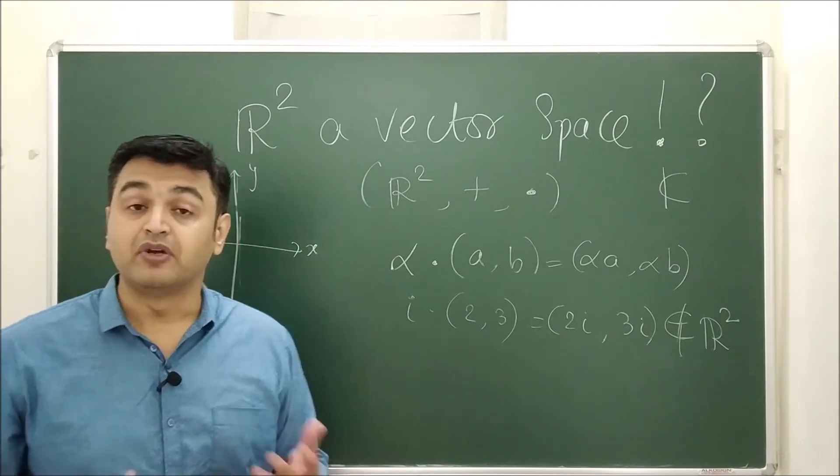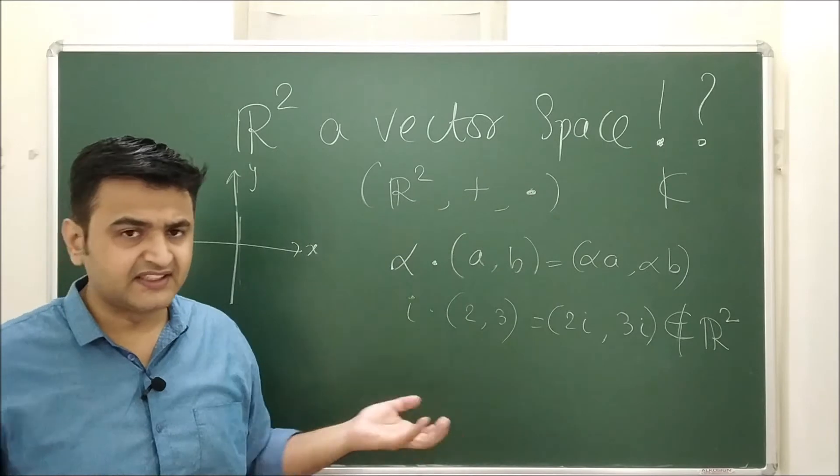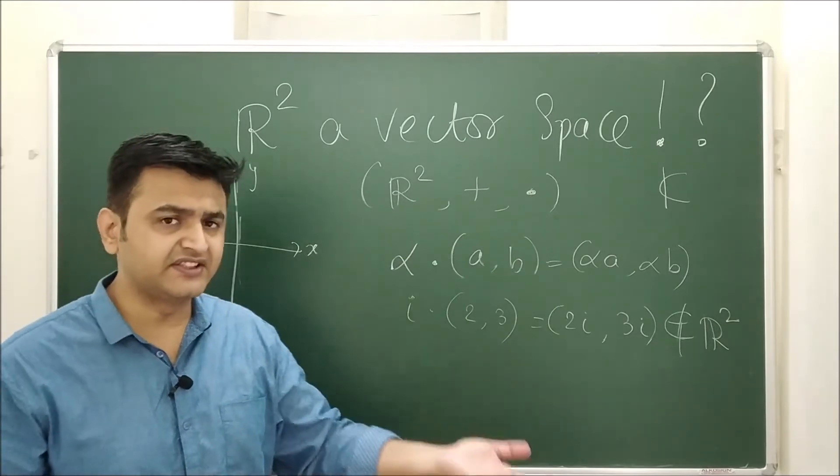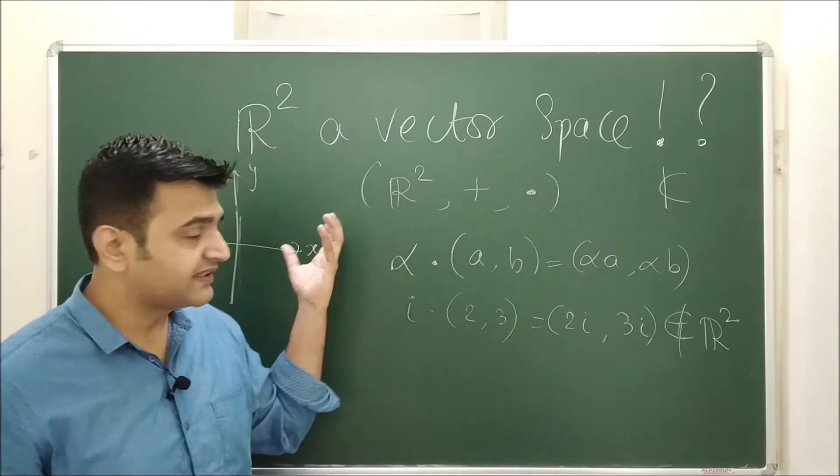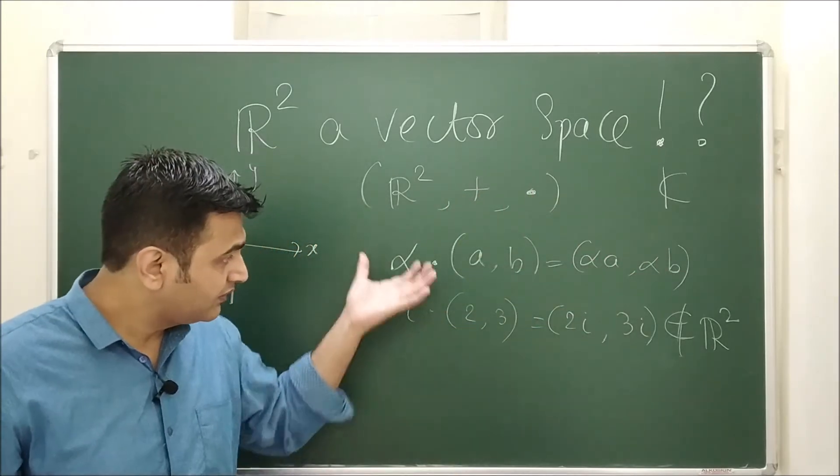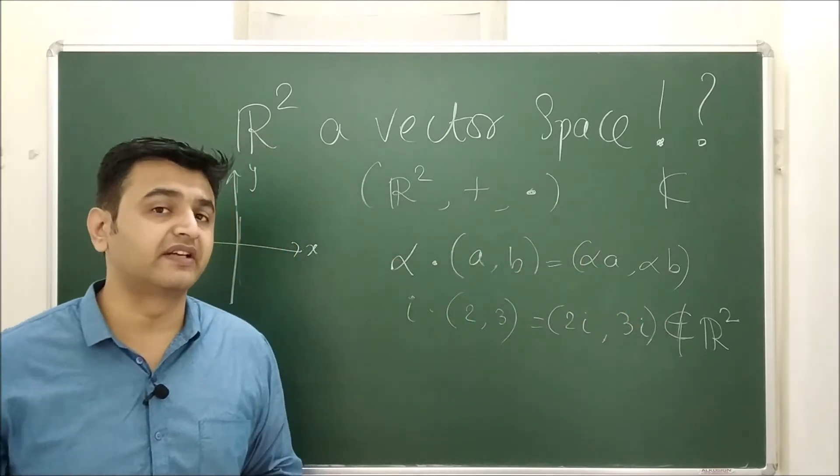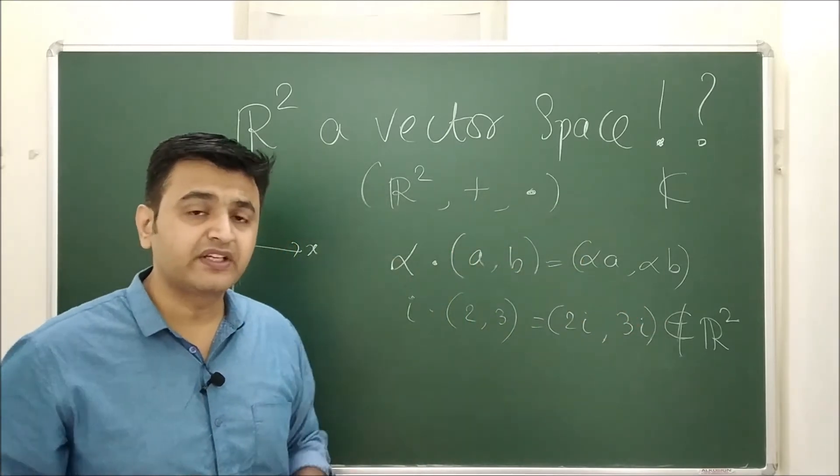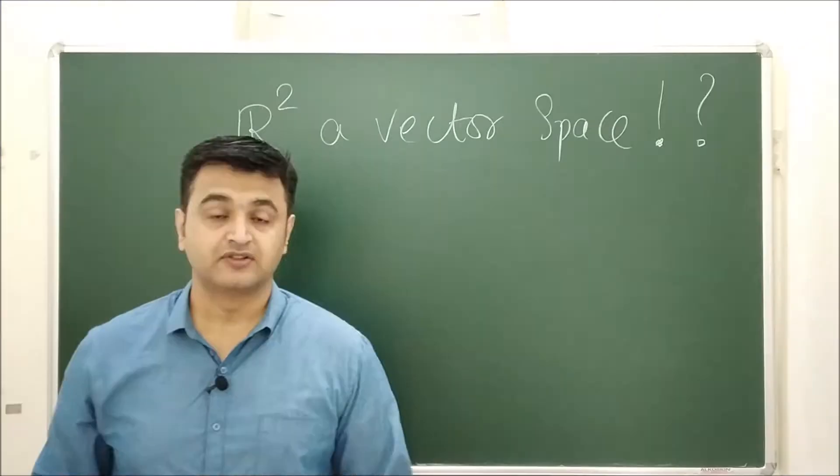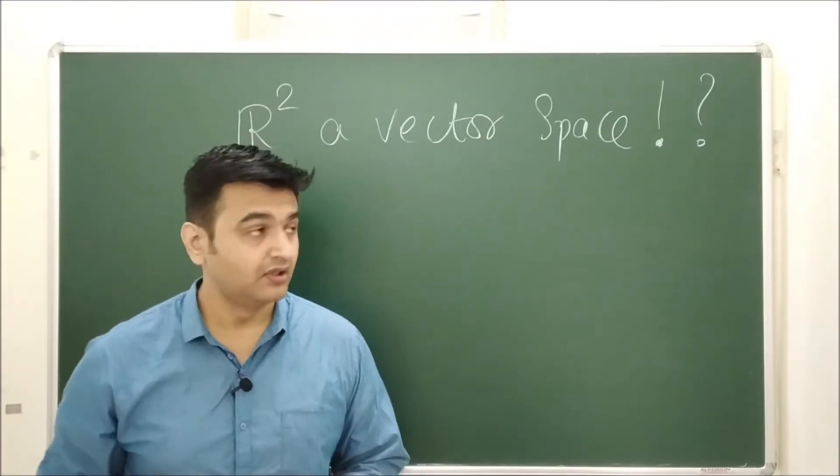So R² is not a vector space over C under usual scalar multiplication. You should always mention the word 'usual' because it may happen that he might have some operation over C under which this is forming a vector space. Or in general, I am saying once a set is given over some field, other than usual operation, there might be some other operation over which it is forming a vector space.